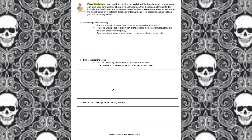Next up we have 'details that set the scene.' This is going to be your description of the setting — where were you, who was with you. My suggestion is to revisit that sensory detail graphic organizer and pack that information in here. Next up is 'description of feelings before the big moment.'